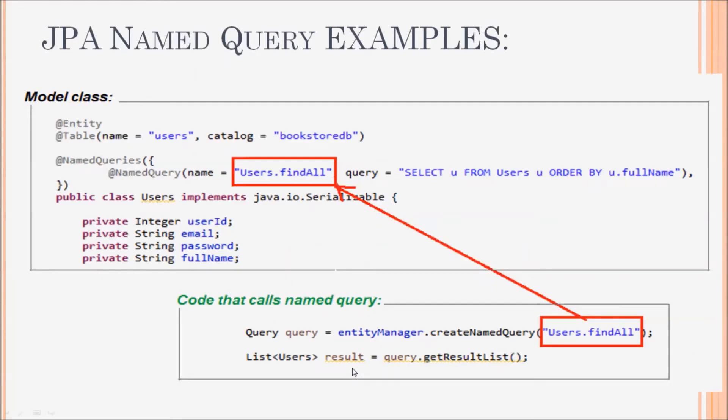A named query in JPQL is a query string which can be embedded in a model class using the annotation. You see the annotation @NamedQueries and @NamedQuery here.